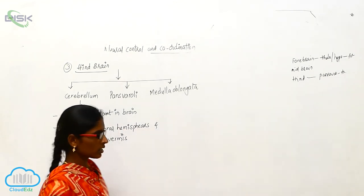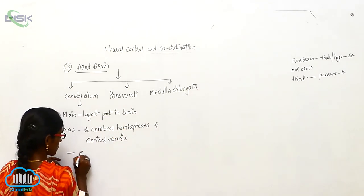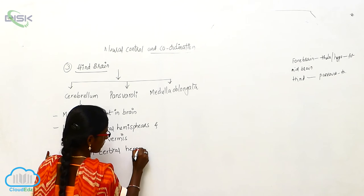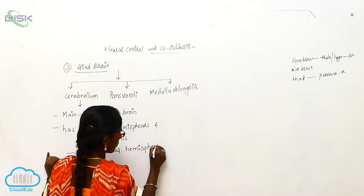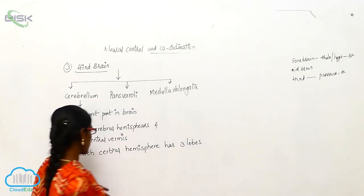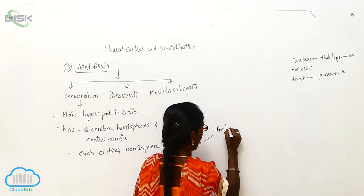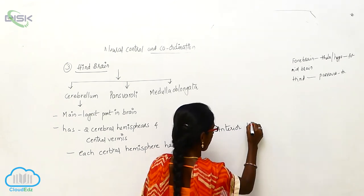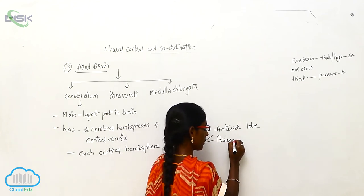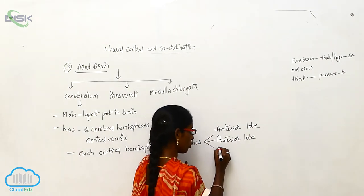Each cerebral hemisphere of the Cerebellum has three lobes: the anterior lobe, the posterior lobe, and the floccular lobe.